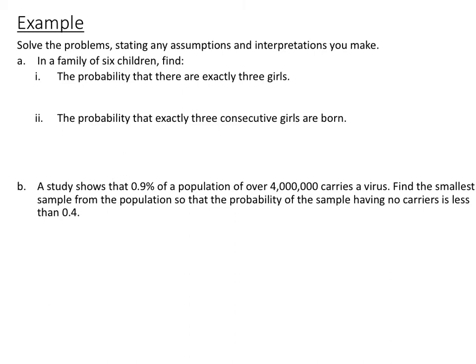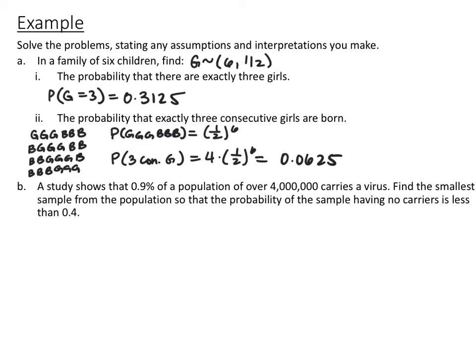The next example: in a family of six children, find the probability of exactly three girls, and the probability of exactly three consecutive girls. Assuming the probability of a girl and boy are equal (0.5), using binomial PDF with 6 trials, P(exactly 3 girls) = 0.3125. For three consecutive girls, this is not a binomial distribution — you just list the possible arrangements. There are four ways to have three consecutive girls, and the probability of any one arrangement is (1/2)^6. So the probability is 4 times (1/2)^6 = 0.0625.